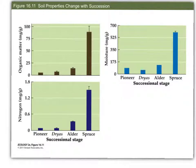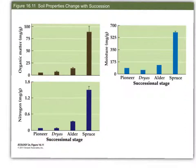These graphs show the same kind of thing — we see changes in soil properties with different successional stages. We have the pioneer, the Dryas, the alder, and the spruce stage, and we see increases in organic matter, increases in nitrogen, as well as increases in soil moisture.